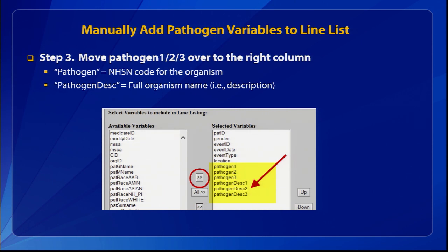You can report up to three different pathogens for an HAI, and each of those pathogens has a different variable: pathogen one, pathogen two, and pathogen three. By default, those variables appear under the available variables column on the left. You'll want to move them over to the right column under selected variables in order for them to appear on your line list. The variables called pathogen one, two, and three are a code — an abbreviation used in NHSN. For example, E. coli will be EC. We also recommend you move over the description variables, called pathogen DESC, which shows the full organism name. Once you move all those variables to the right column, you're able to run your line list and view the different pathogens reported.